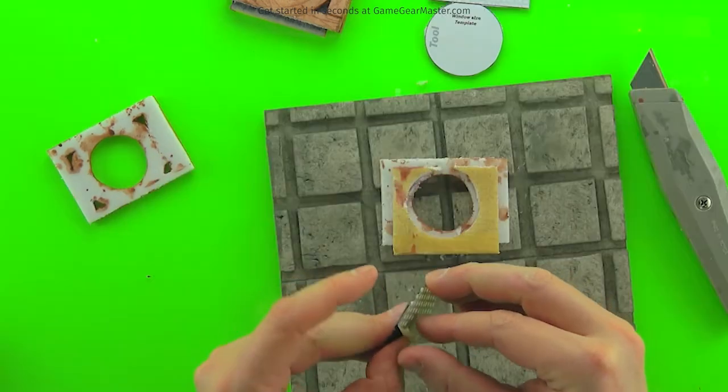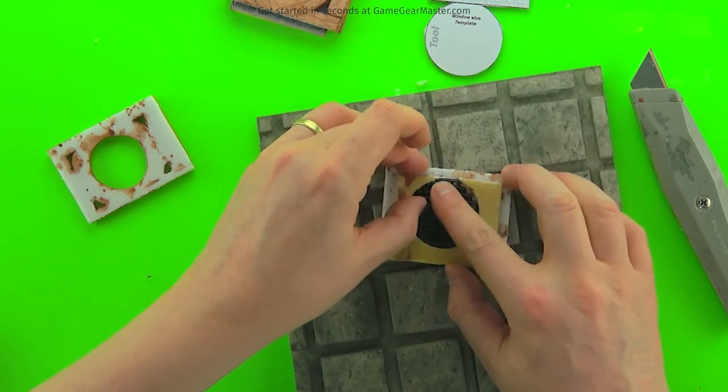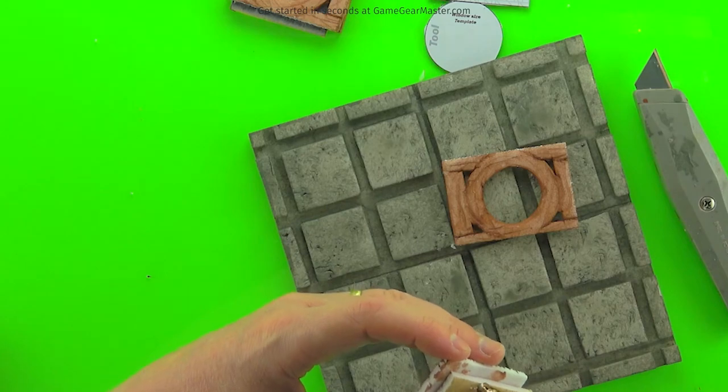There you go, take off the masking tape. This way you don't even have to glue it in place because it will never be able to get out. And then just glue on the other wall.